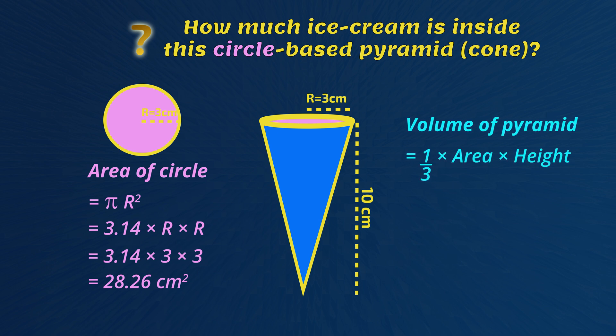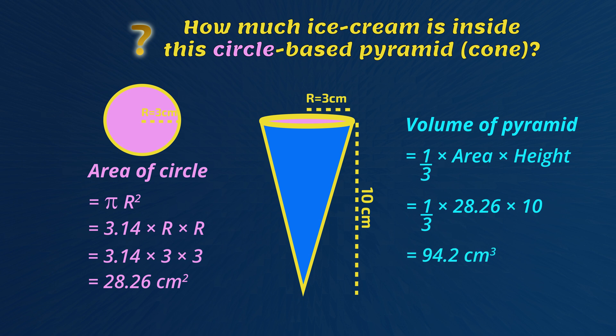Now that area goes into the rule for the cone. So one-third times by the area of the circle of 28.26 times by the height of the cone of 10. The volume of delicious ice cream inside this cone is 94.2 cubic centimeters.